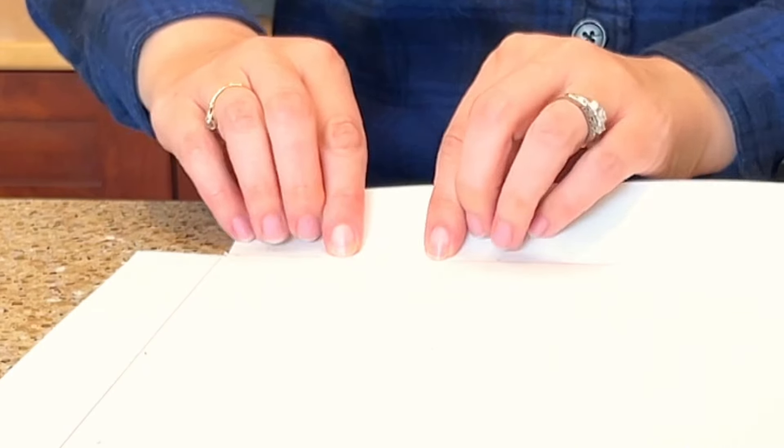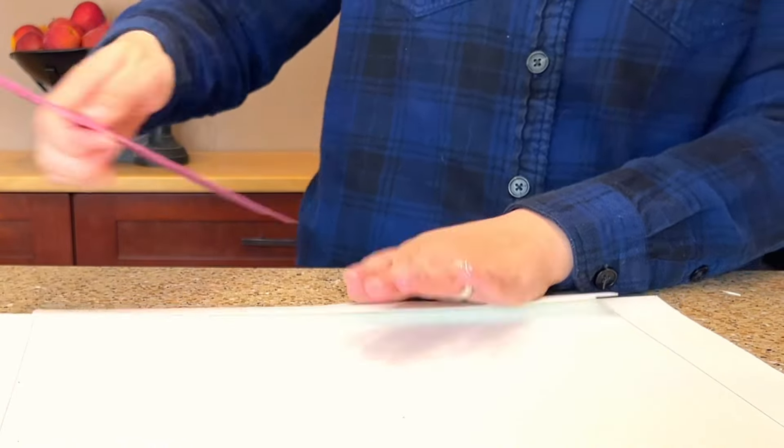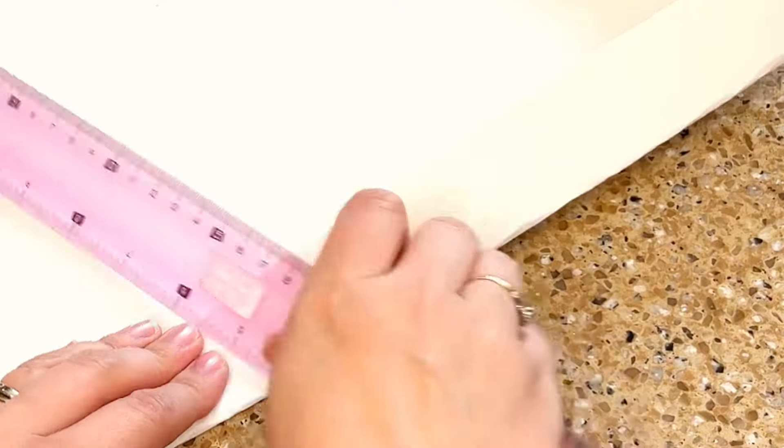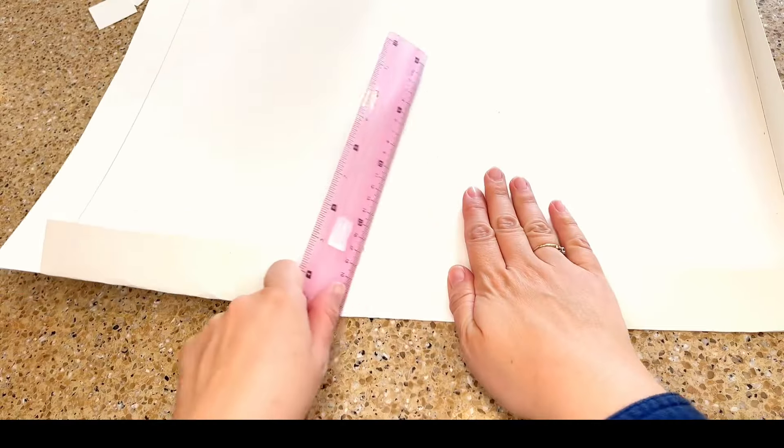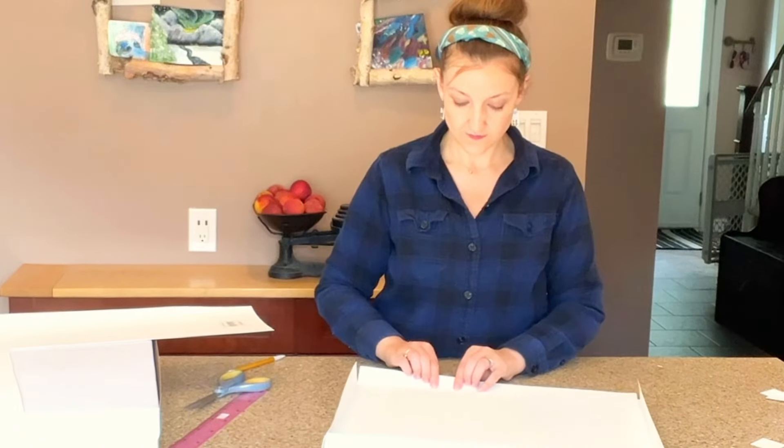I'm using my fingertips as a guide and I'm going to fold each side in. I'm placing my fingertips just on the inside of the line I drew. I need it to be slightly smaller than the original box, that way it fits on the inside when I'm done. Use the ruler to make a clean sharp fold on all four sides of the box.